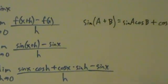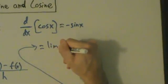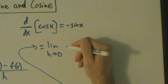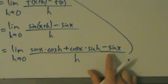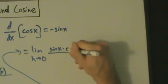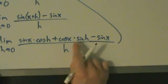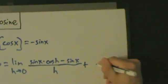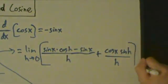Now we're going to combine some stuff and simplify. This is going to equal the limit as h goes to 0 of sine x cosine h plus cosine x sine h minus sine x. This first term and this last term both have sine of x, so let's combine them. We'll do sine of x times cosine h minus sine of x, all over h, plus cosine x sine h over h.